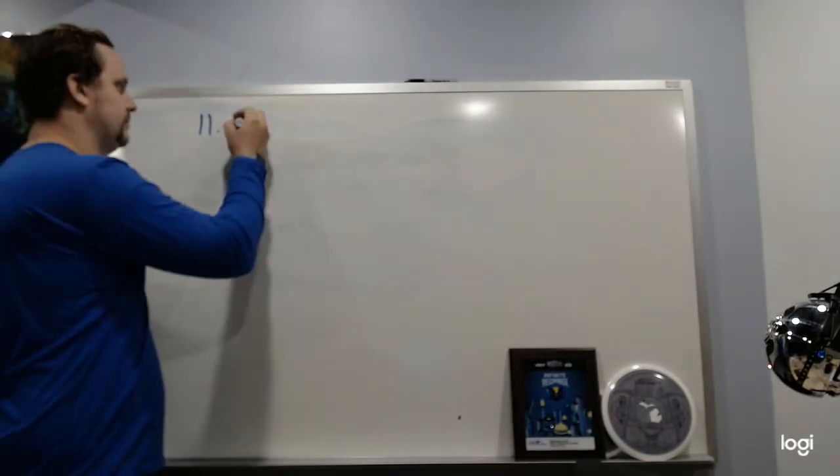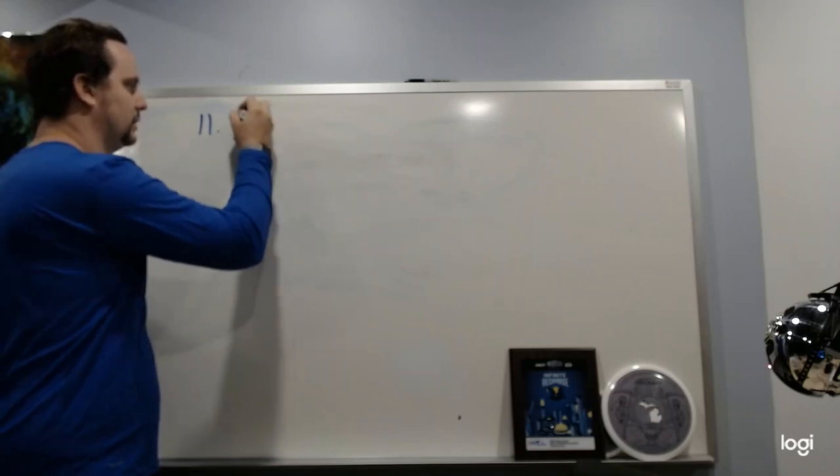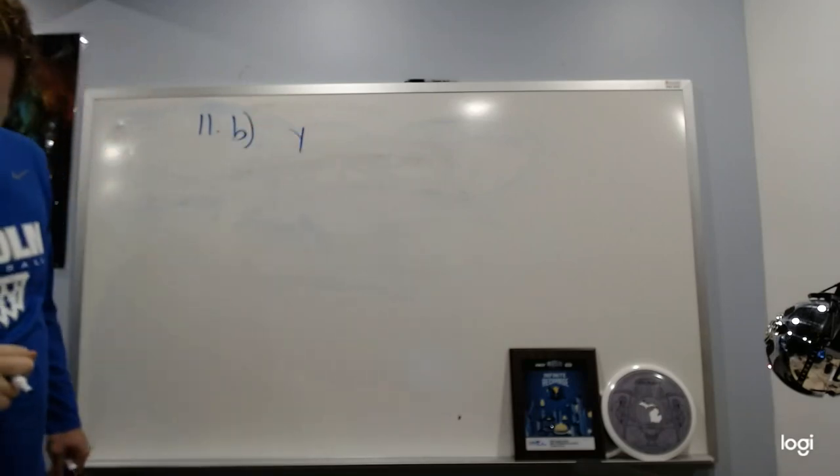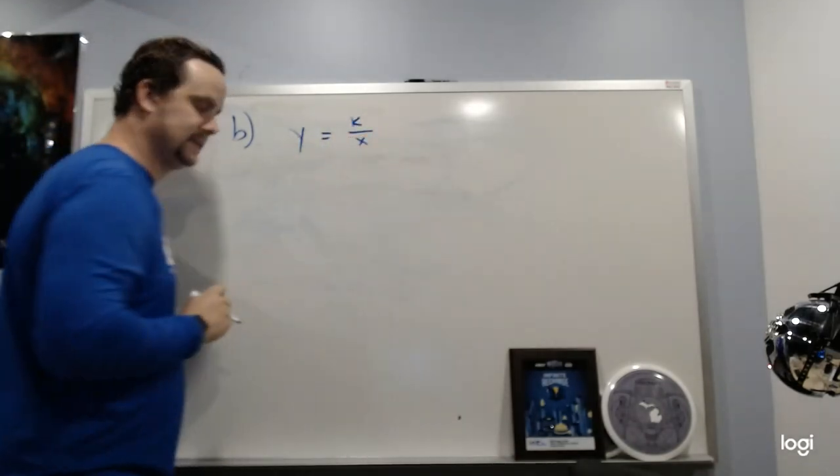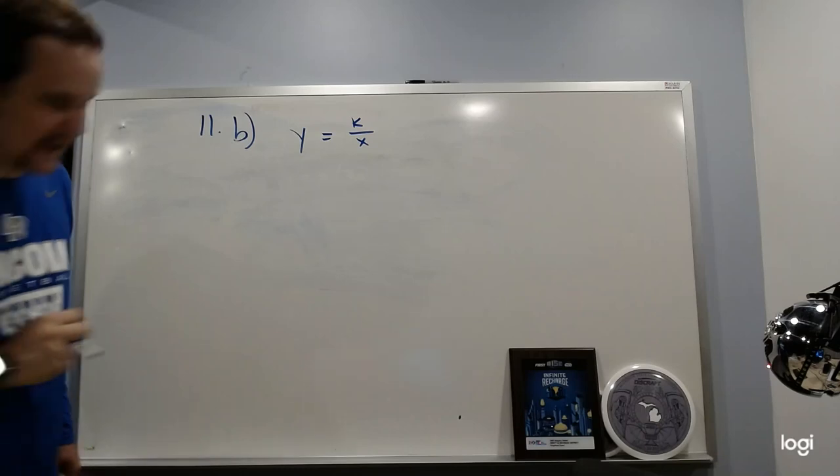All right, 11B: we have Y equals K over X, and it says what happens when X is halved.